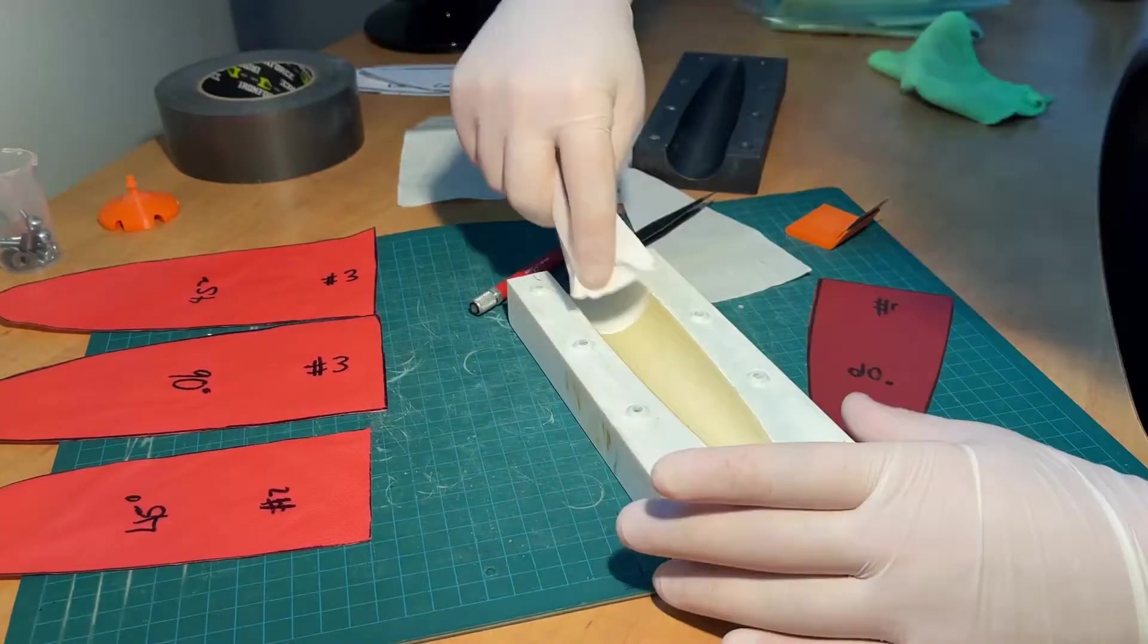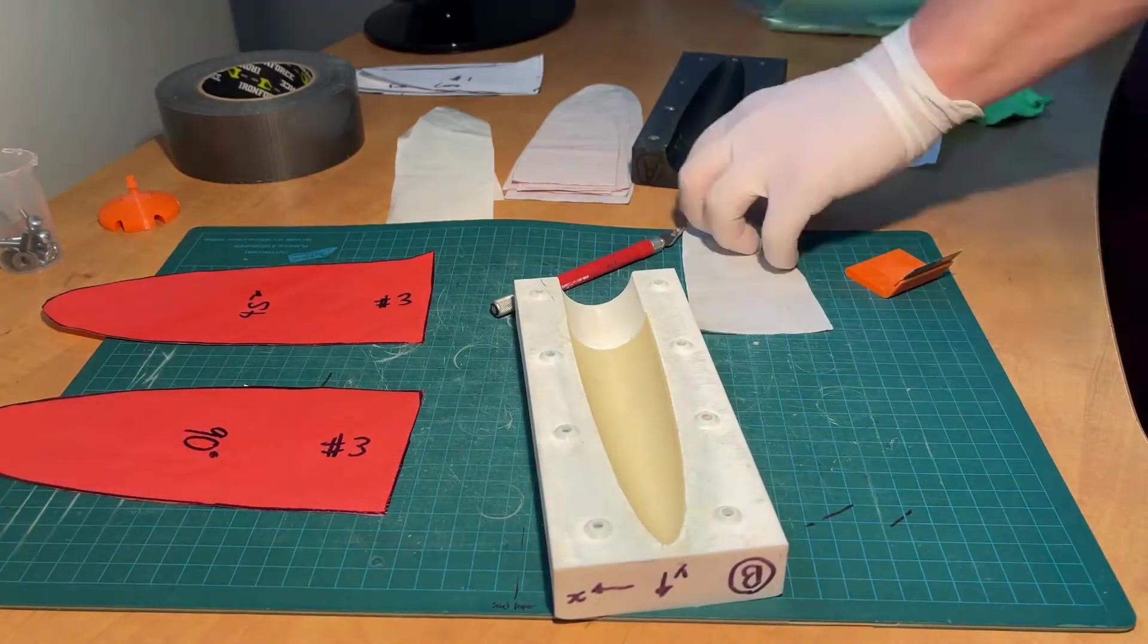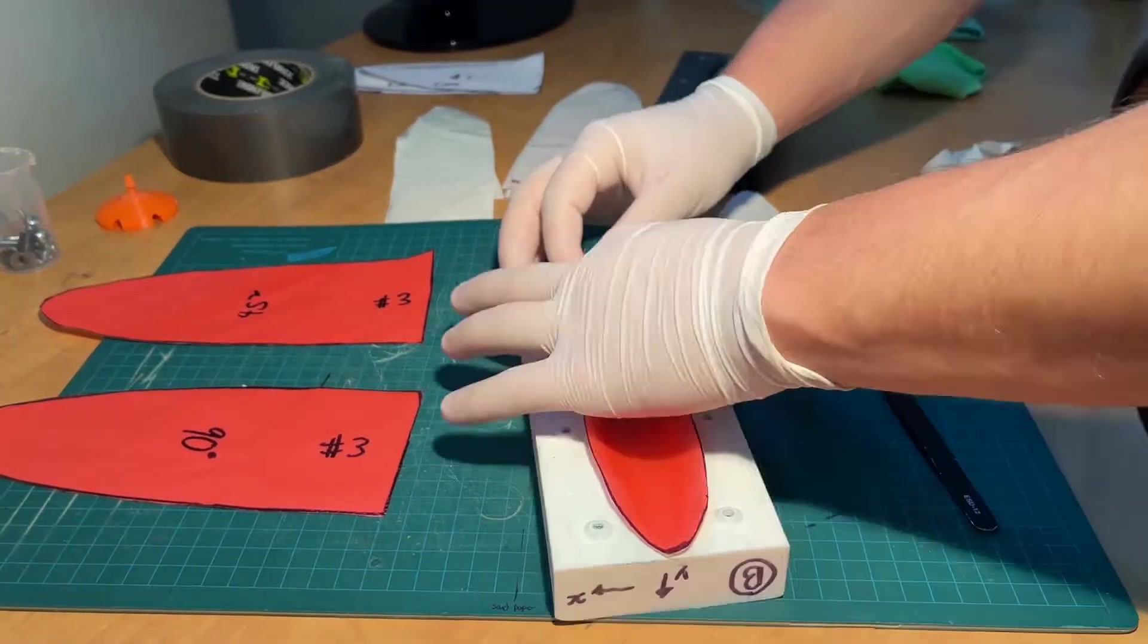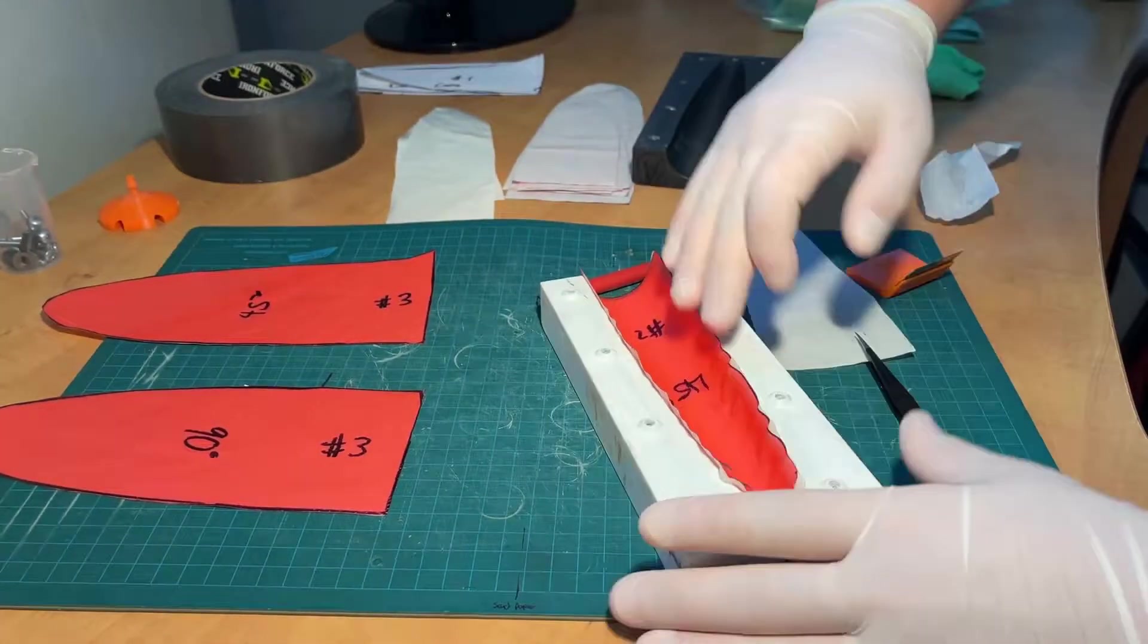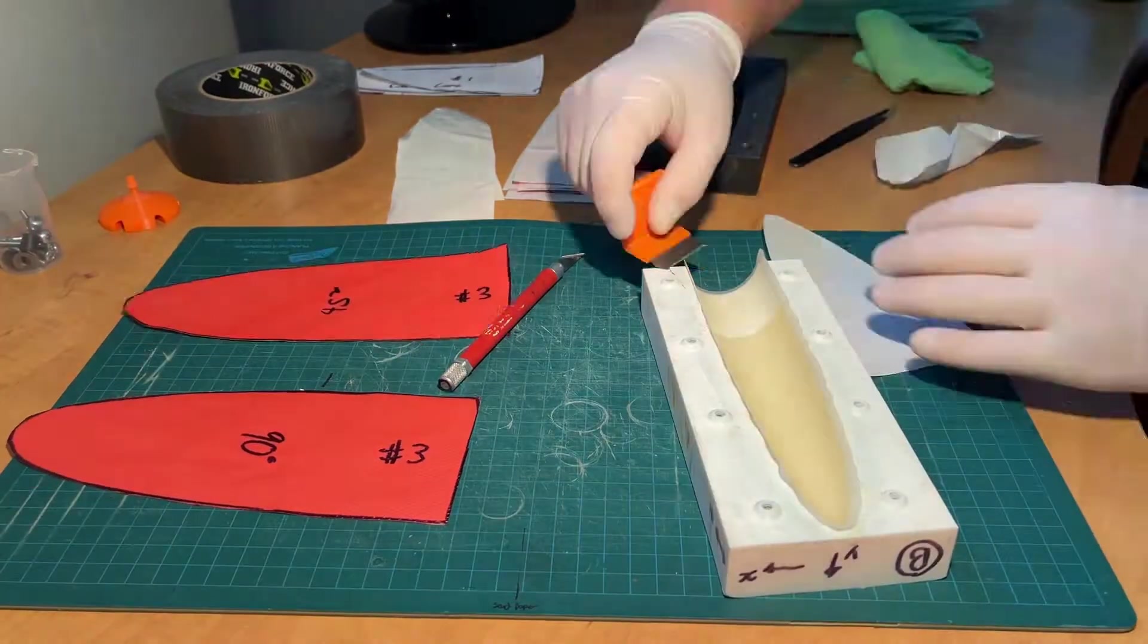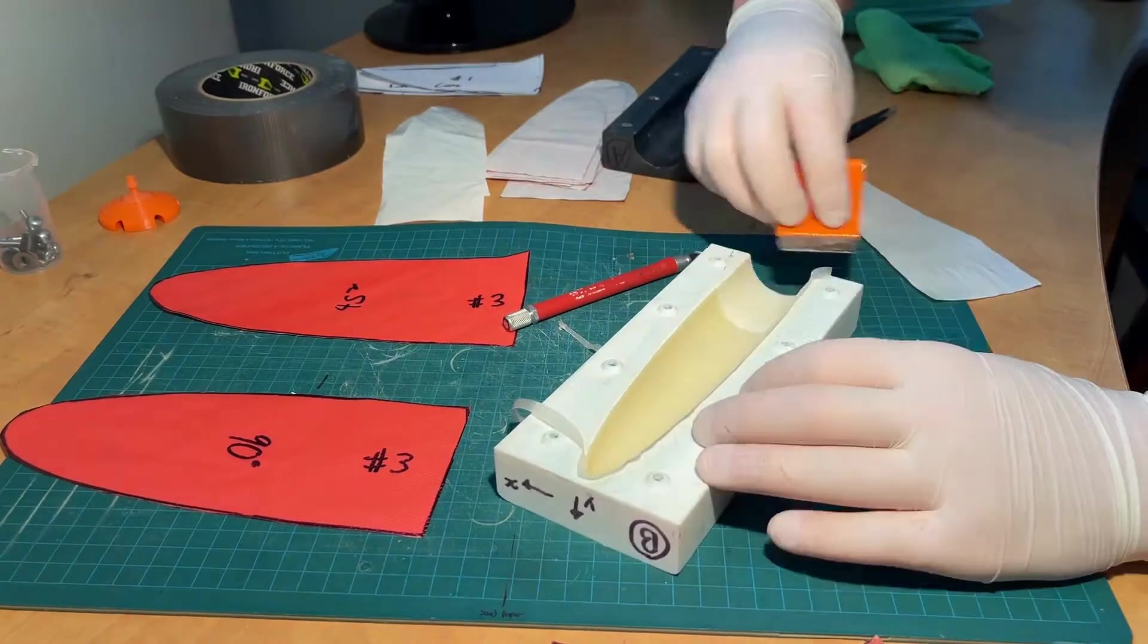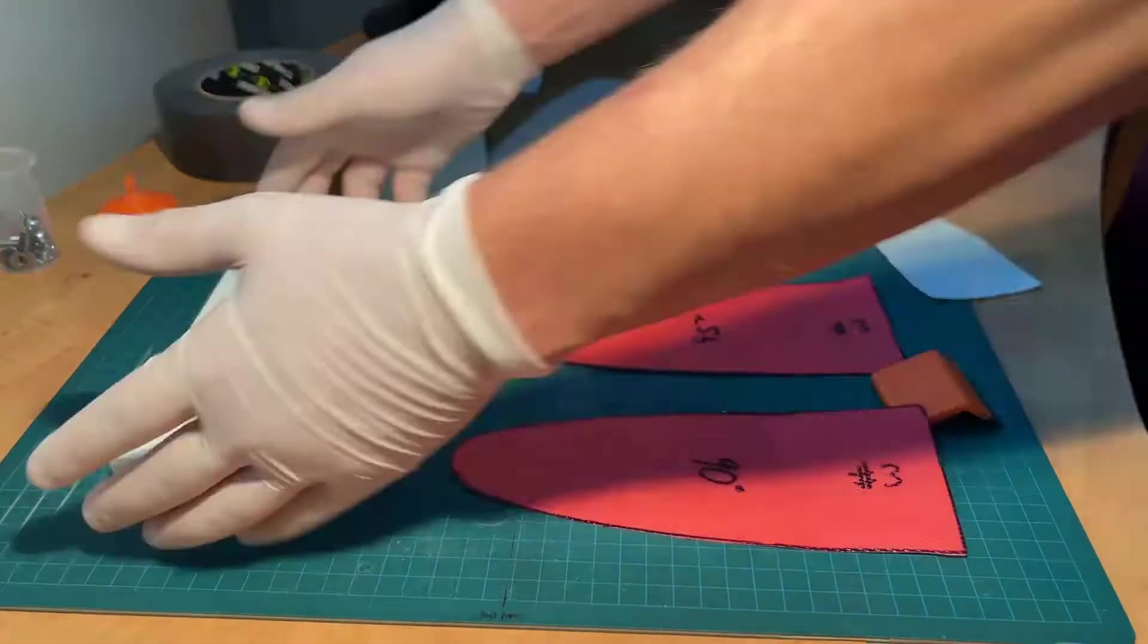Once satisfied, apply the 45 degree number one sheet on top of the first layer using the same technique. Then do the same for the last 90 degree number one sheet. Then apply the single 45 degree number two sheet and trim it in the same fashion, but this time ensuring the farthest aft edge is trimmed flush with the mold end.